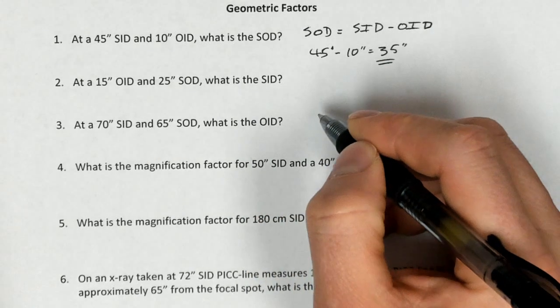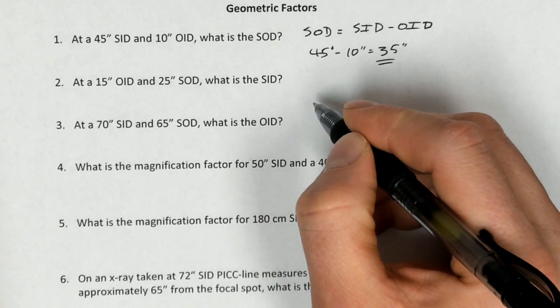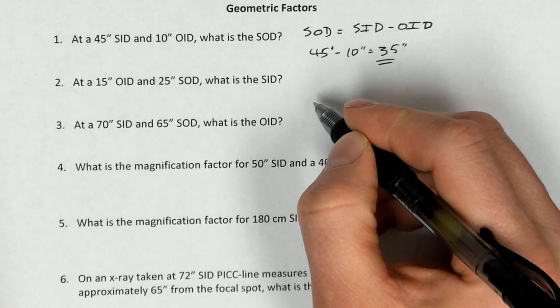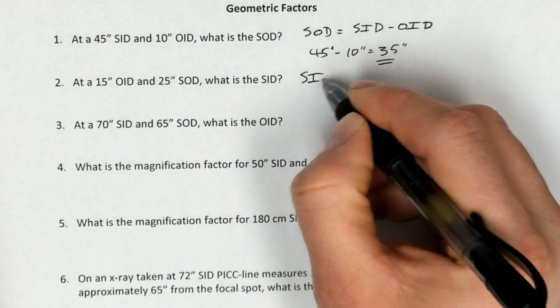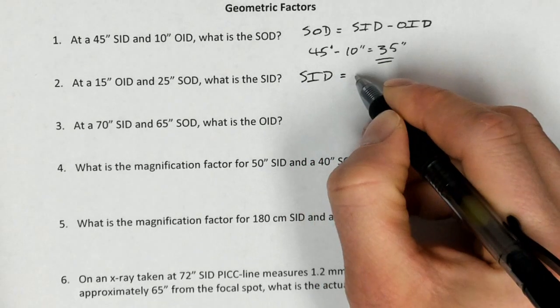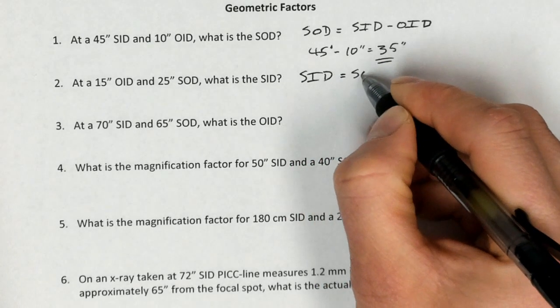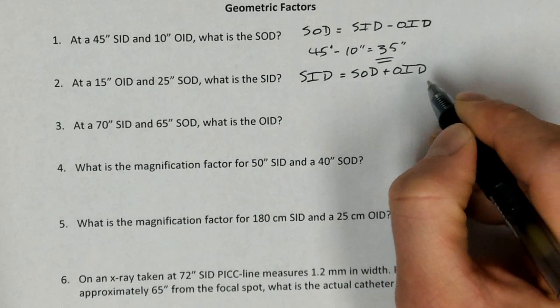At a 15-inch OID and a 25-inch SOD, what is the SID? Well, SID is going to equal the source to object distance plus the object to image distance.